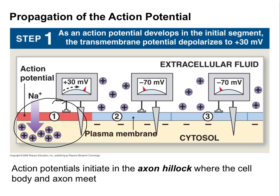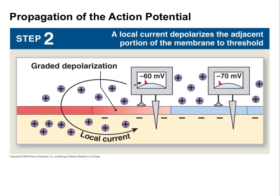As this voltage change takes place, current on the inside of the cell begins to spread to neighboring locations along the axon. Since we're at the axon hillock, the signal propagates essentially in one direction — along the axon and not back toward the dendrites. As that current moves, it depolarizes the next segment of the axon. If the current is strong enough to bring that next segment to threshold, it will trigger an action potential there.